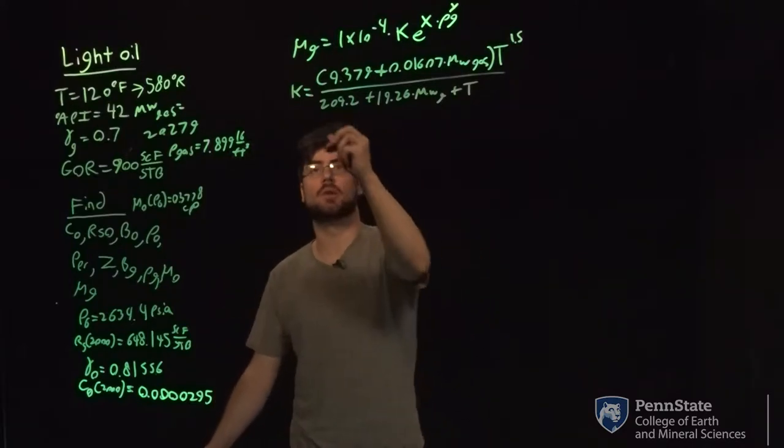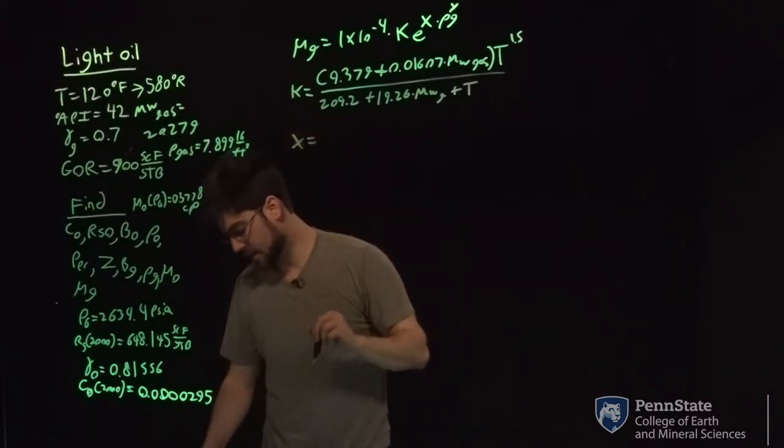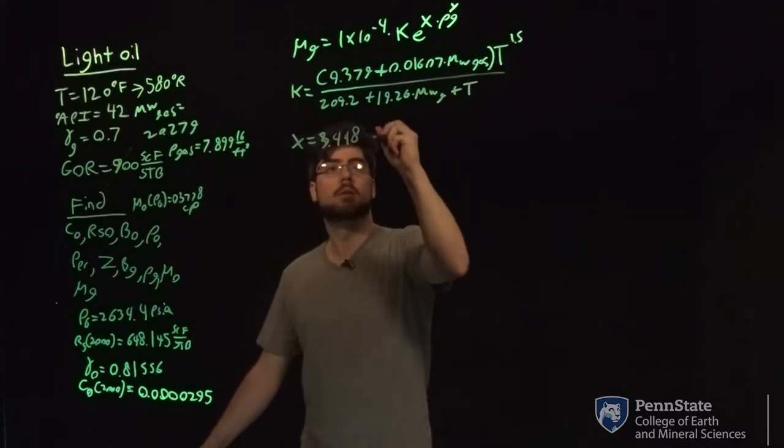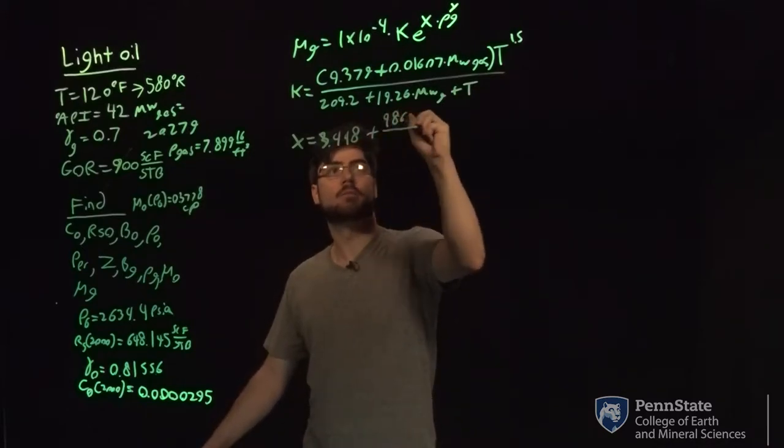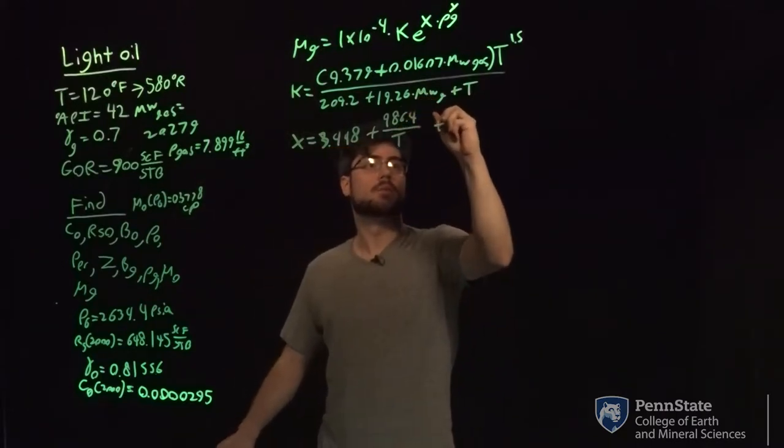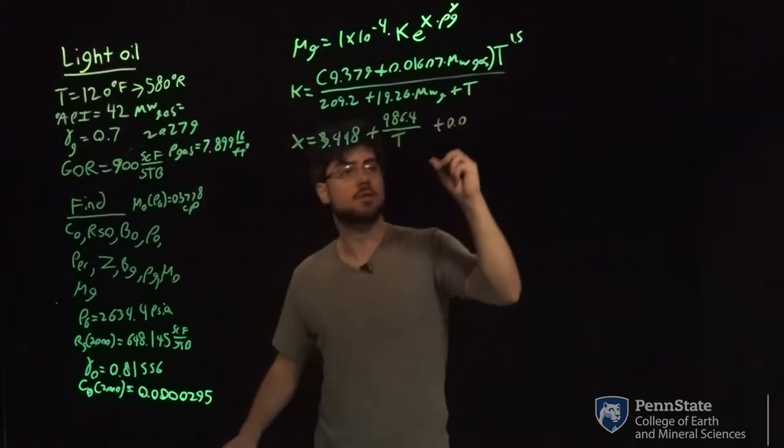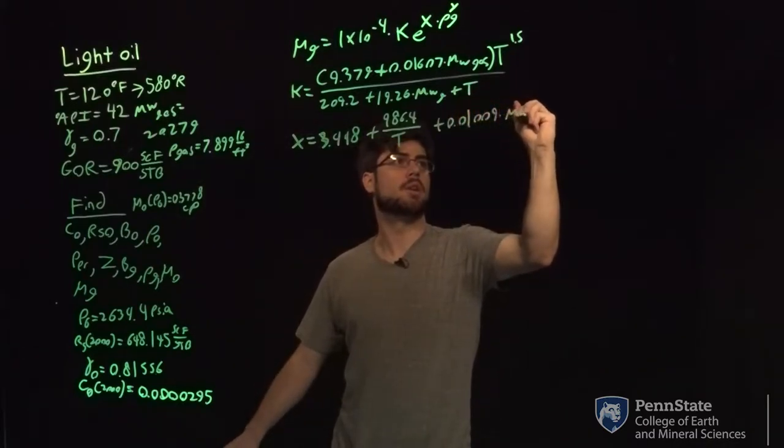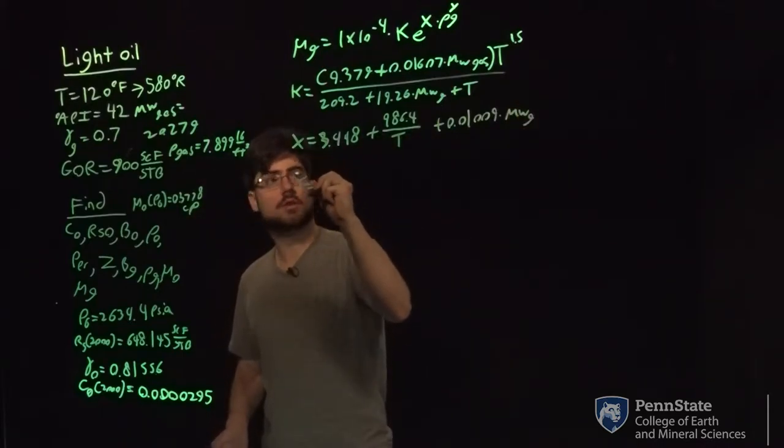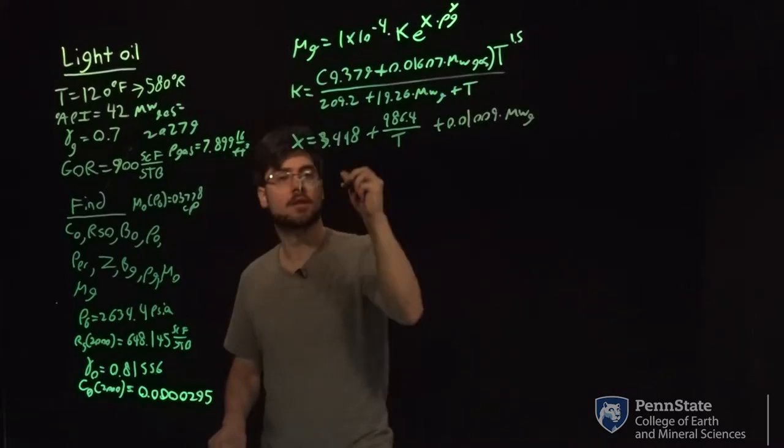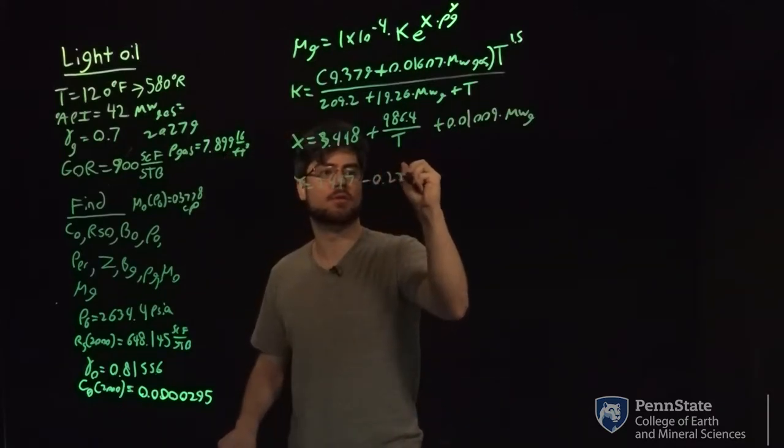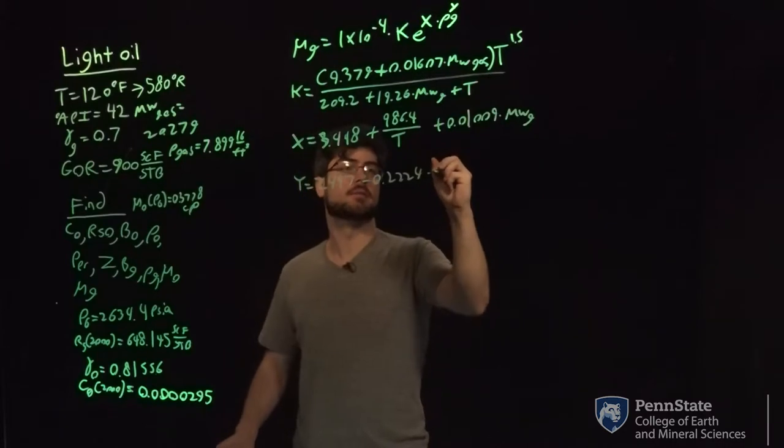All the t's in these equations will be for viscosity gas. x equals 3.448 plus 986.4 over t plus 0.01009 times the molecular weight of the gas. y equals 2.447 minus 0.2224 times x.